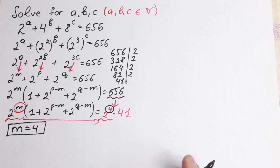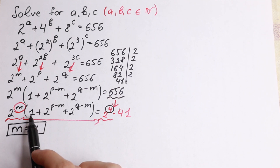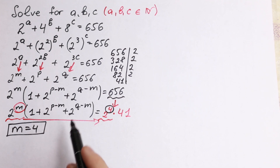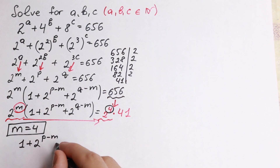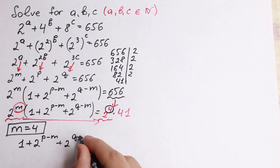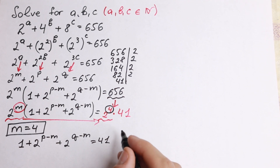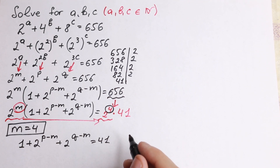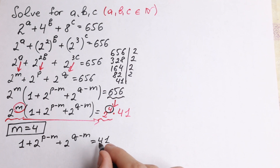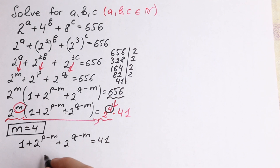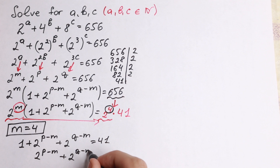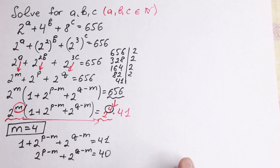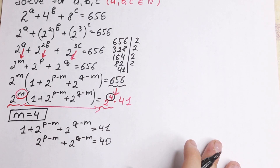Let's go next. The parentheses equals 41, so 1 plus 2 to the power p minus m, plus 2 to the power q minus m, equals 41. Bringing the 1 to the right-hand side, we have 2 to the power p minus m, plus 2 to the power q minus m, equals 40.